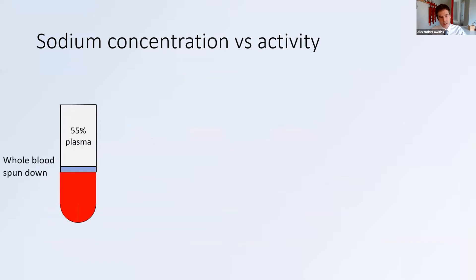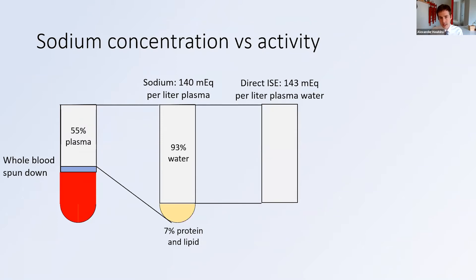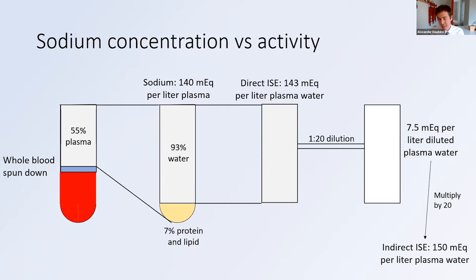To visualize this: you take whole blood and spin it down — 55% of it is plasma. The first measurement looking at just the concentration of sodium gives you 140 milliequivalents per liter of plasma, which is what you'd get with flame photometry. When you do a direct ion selective electrode measurement, you get 143 — because you're only measuring sodium in the water portion of plasma, but there are still ion-to-ion interactions: sodium interacting with chloride, bicarbonate, and albumin. Then if you do a dilution, you'll get 7.5 milliequivalents per liter of diluted plasma water, which you multiply by 20 to get the indirect measurement — 150 milliequivalents per liter of plasma water.